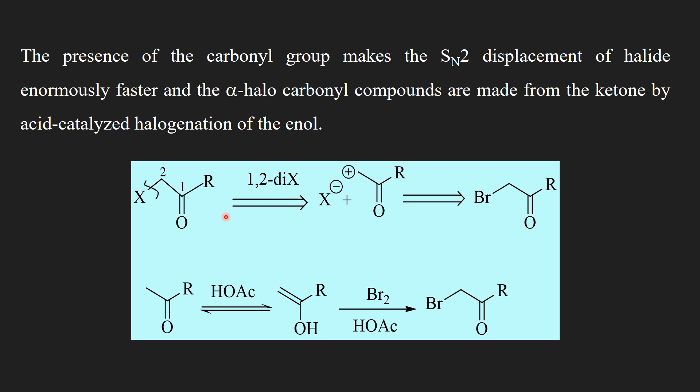A disconnection given here gives a different synthon, and the best reagent for this type of synthon are the alpha-halocarbonyl compounds. At first, this looks like a one-group disconnection where only the bromine-bearing carbon is involved, but actually it isn't. The presence of a carbonyl group makes the SN2 displacement of halide enormously faster, and the alpha-halocarbonyl compounds are made from the ketones by acid-catalyzed halogenation of the enol. By this reaction, alpha-halogenation is easily possible.